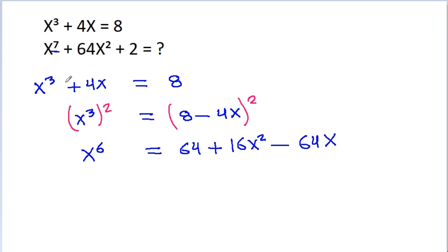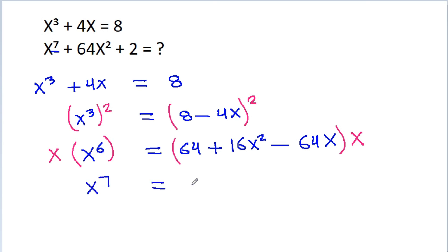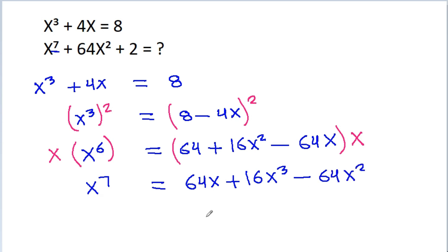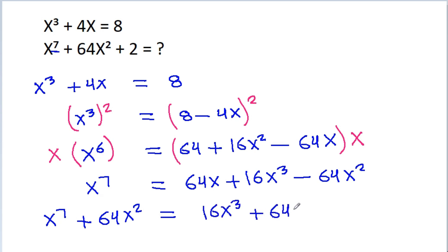And for x power 7, if we multiply both sides with x, then x times x power 6 is x power 7, which is equal to 64x plus 16x cube minus 64x square.